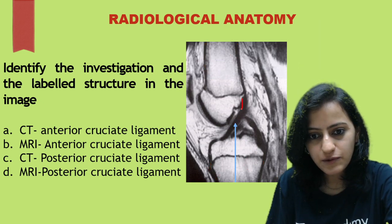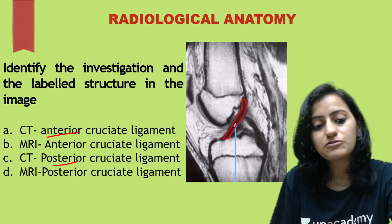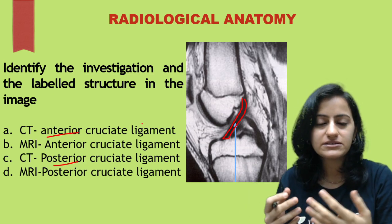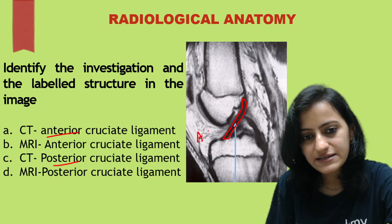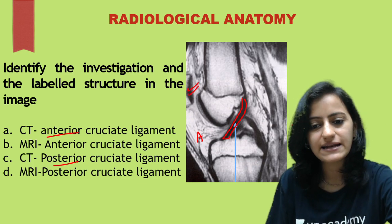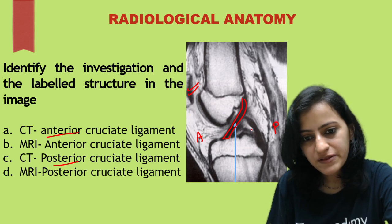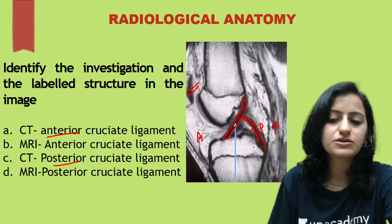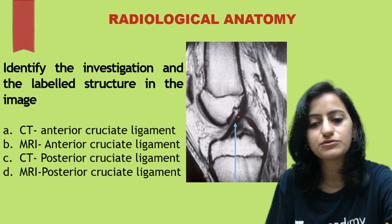The arrow is asking: what is this structure? The options are either the anterior or posterior cruciate ligament. Anterior or posterior is determined based on the attachment on the tibia. This ligament is attached anteriorly — patella is here, so this is anterior — making this the anterior cruciate ligament. The one inserted posteriorly is the posterior cruciate ligament.